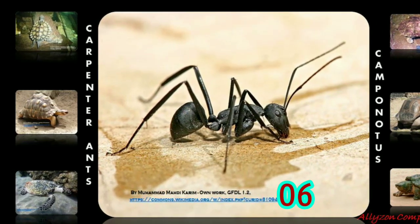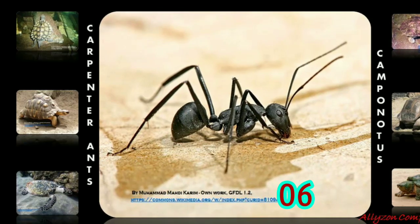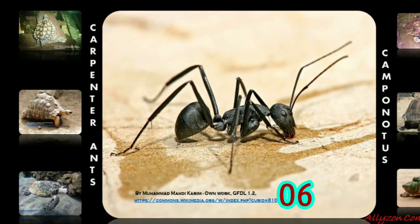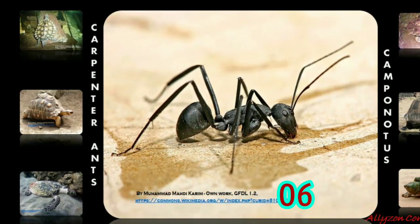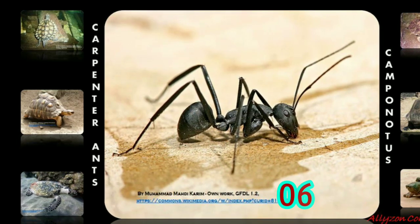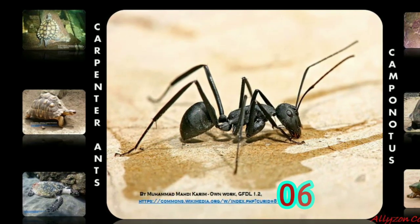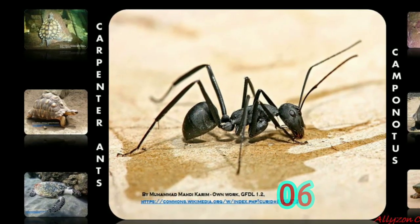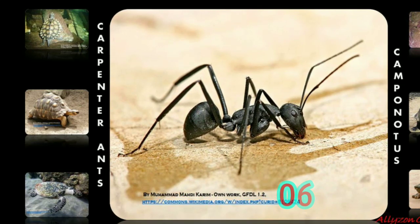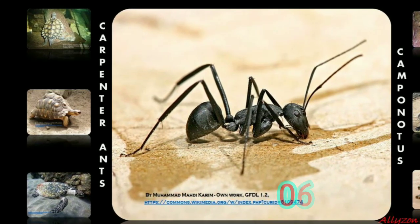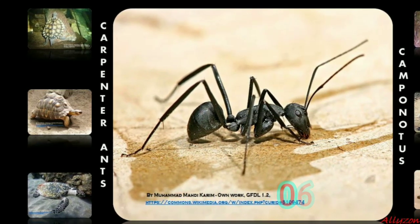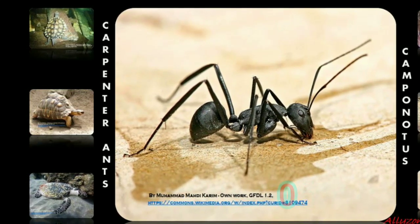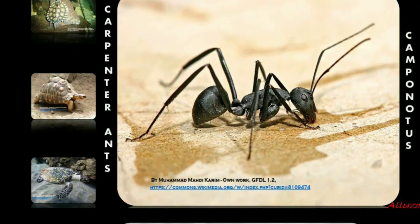Queens can live up to 10 years, and female workers can live up to 7 years, but males die soon after mating. Carpenter ants get their name from their nest building, where they excavate the wood and form smooth tunnels inside of the wood. Carpenter ants do not eat wood; they only tunnel and chew through wood to create nests.